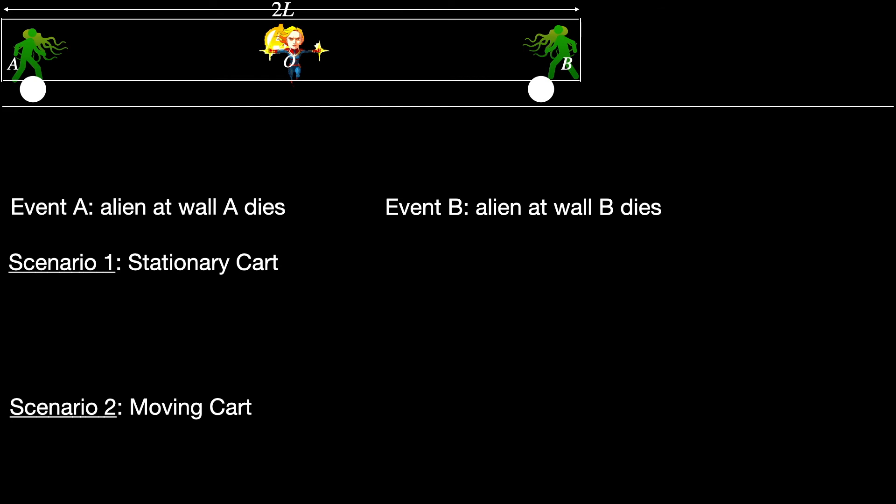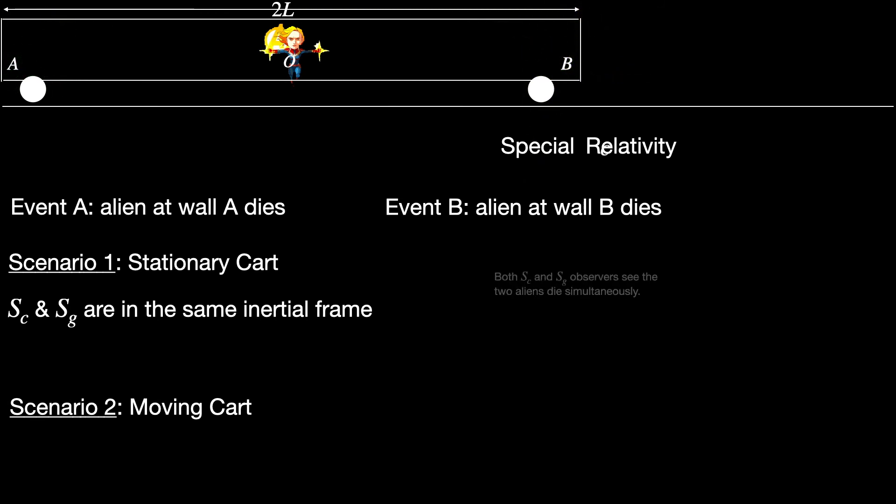But remember that this time we have not regular tennis balls but photon blasts instead. So they do not act as per the rules of Galilean relativity. They rather obey the postulates of Einstein's special relativity, as people found out by those Michelson-Morley type of experiments we mentioned before. So we have to think through our thought experiment accordingly. So the first scenario is trivial. Cart is stationary with respect to the ground, so SG and SC observers are in the same inertial frame, so their observations must agree. Since the two photon blasts are shot simultaneously and move with speed C, and the aliens are at equal distance L from the center, they die together, that is simultaneously, as witnessed by both SC and SG observers.